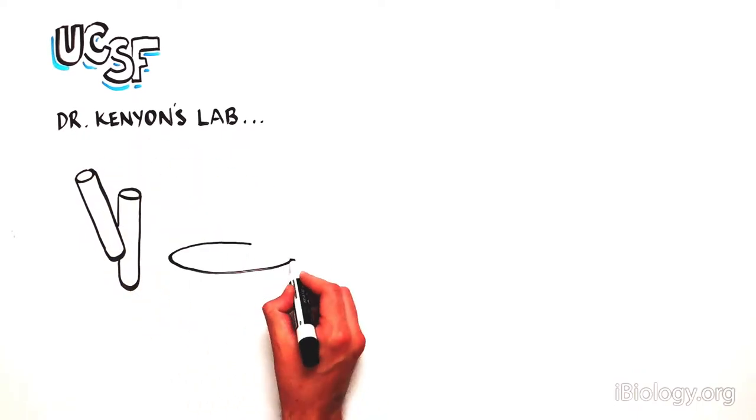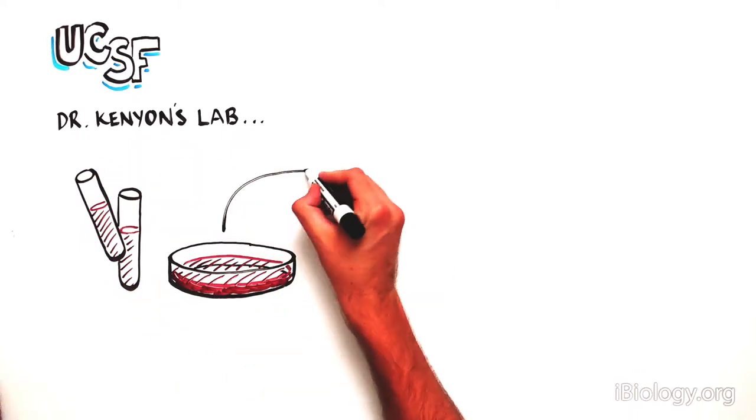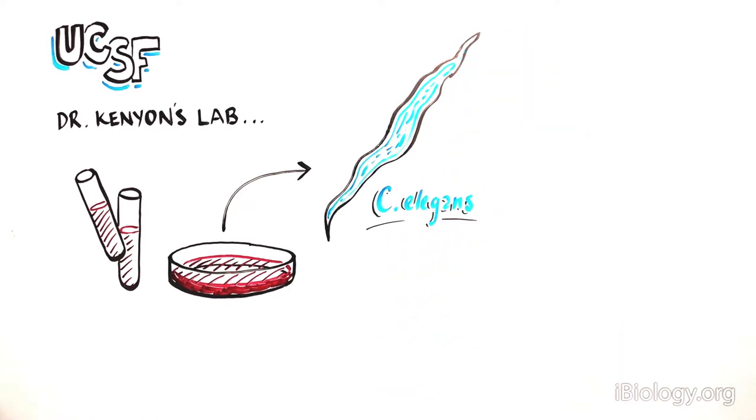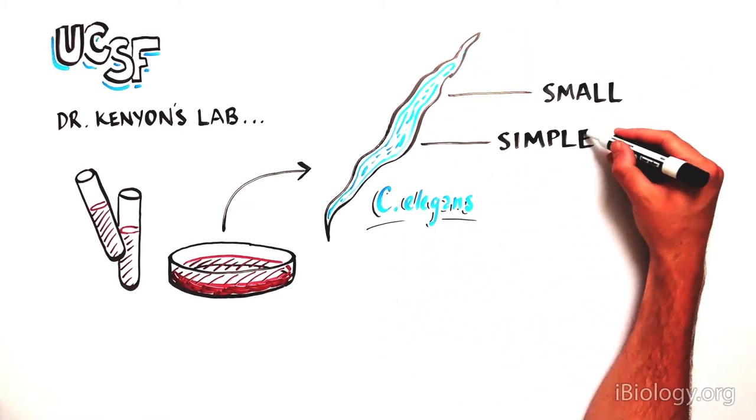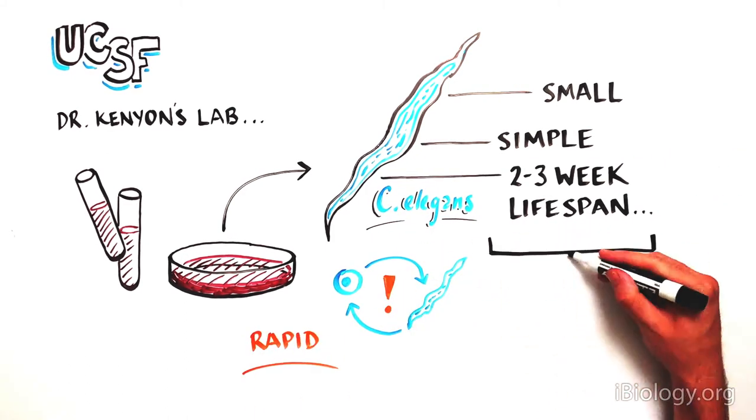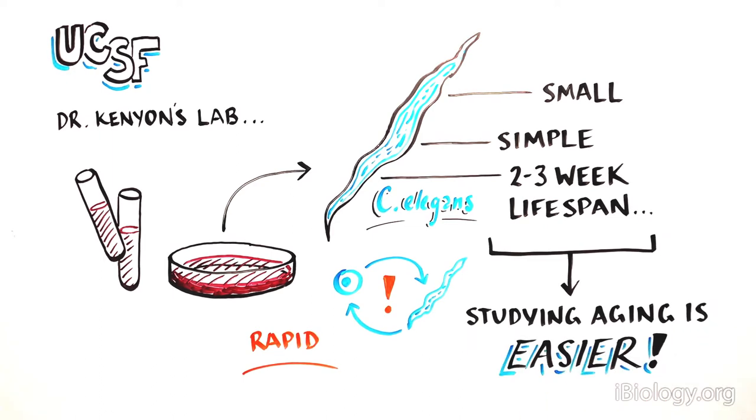Dr. Kenyon's laboratory used a model organism to find the genes responsible for aging, the worm C. elegans. C. elegans are small, simple organisms with a lifespan of 2-3 weeks. This rapid life cycle makes the study of aging much more feasible.